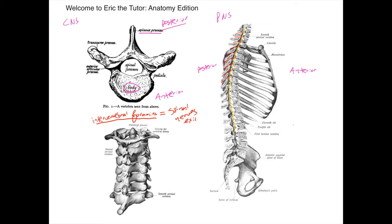We also have transverse processes, which are the most lateral structures. And then we have an arch — all of this region forms the arch — and specifically this location here, we have the lamina.